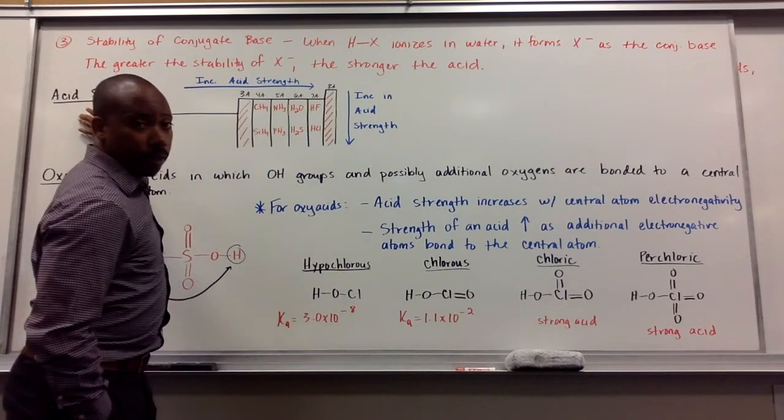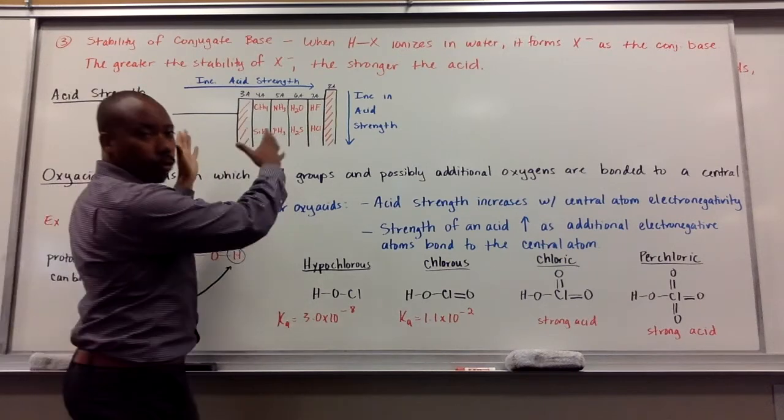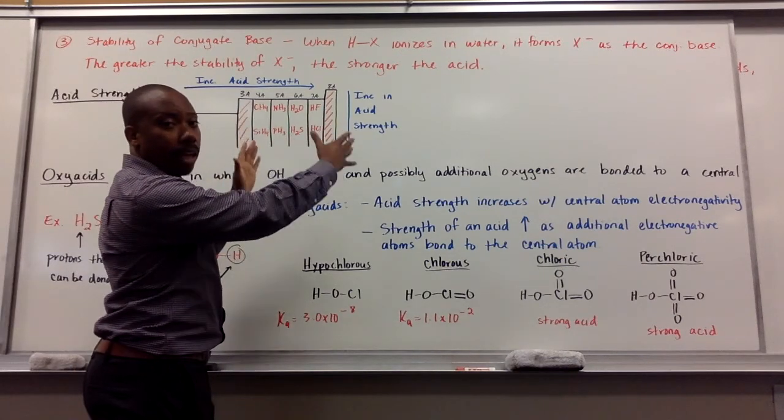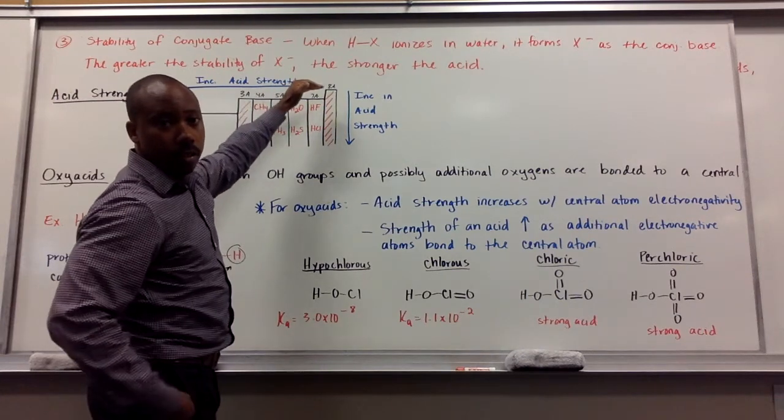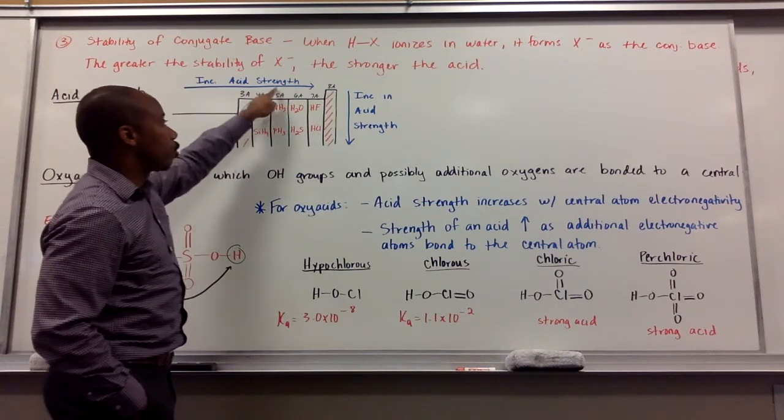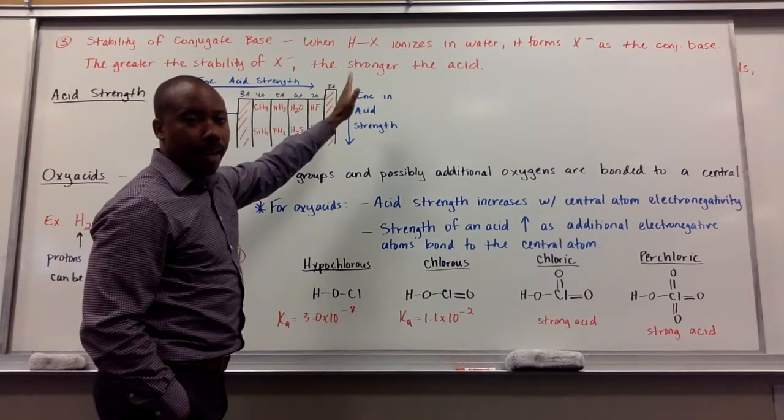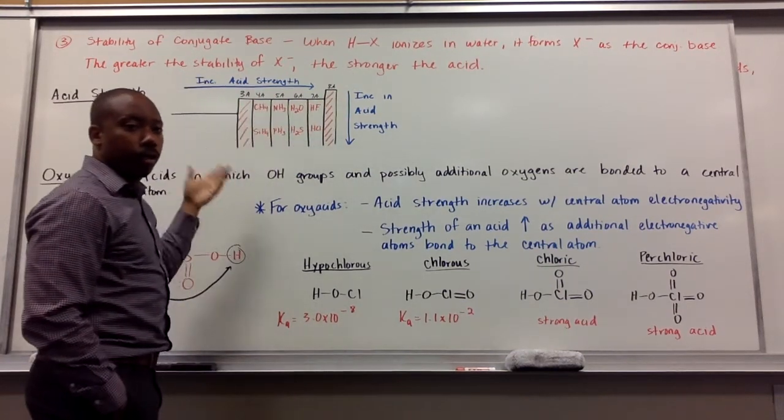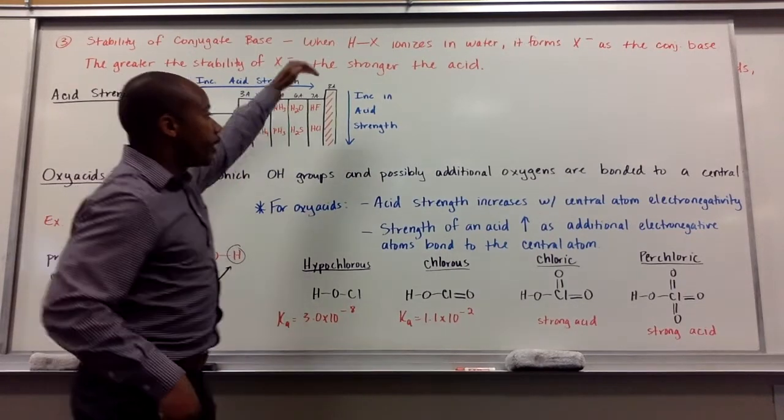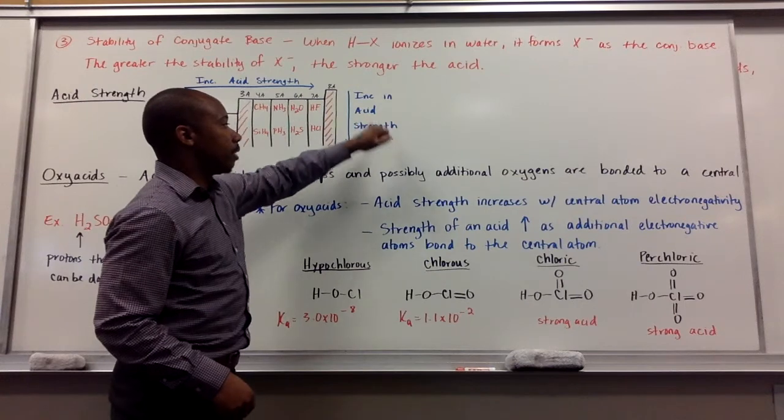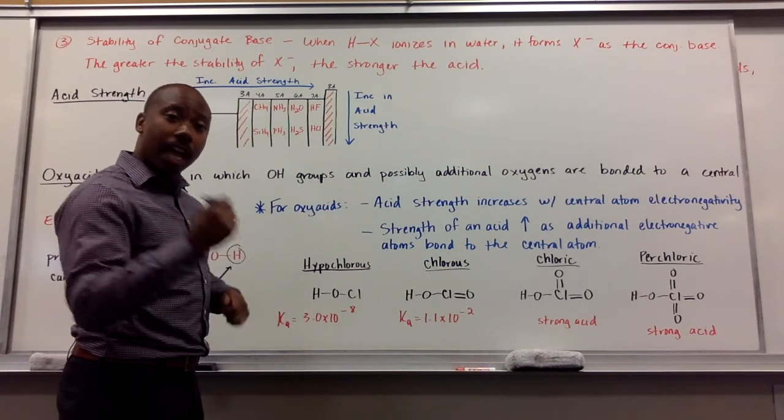Going a little further, looking at acid strength. Looking at the periodic table, we're just looking at the right side of the periodic table with the group A elements. As you go from left to right, there's an increase in acid strength. Group 3A all the way up through 8A. I know this is small print guys, but you can zoom in if you need to see this. As you go down the periodic table, there's an increase in acid strength.